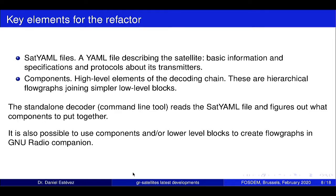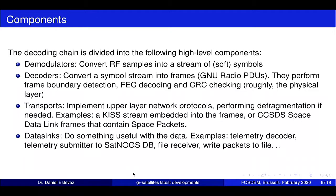It's also possible for the user to go into GNU Radio Companion and use either high level components or lower level blocks from GR Satellites to create any kind of custom flow graph. Speaking from IQ data to the final packet, you can break the chain logically into four main tasks. The first one is demodulators — these convert the RF samples into symbols. Then decoders look at the symbol stream, detect the boundaries of the packets, perform forward error correction, CRC checking, etc.